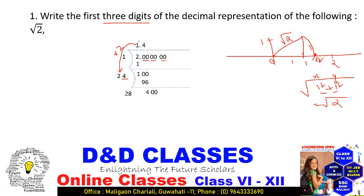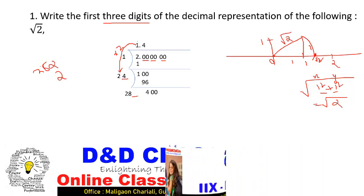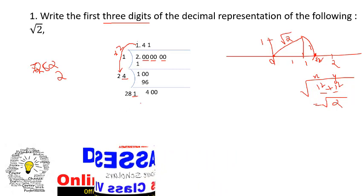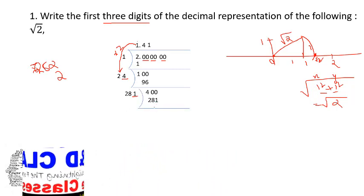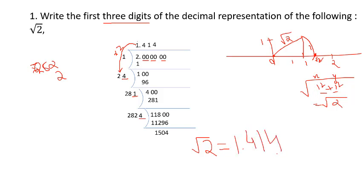Bring down the next set of zeros. Double 14 to get 28. Find what digit multiplied with 28-something is less than 400. If 282 times 2 gives 564, that's too big, so take 1: 281 times 1 is 281. Subtract to get 118. Bring down the next zeros. Double 141 to get 282, multiply by 4: 2824 times 4 is 11296. Subtracting gives 150. So the first three digits of root 2 equal 1.414.